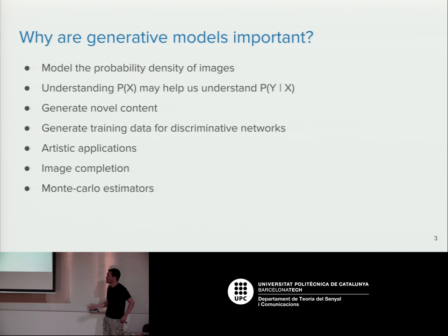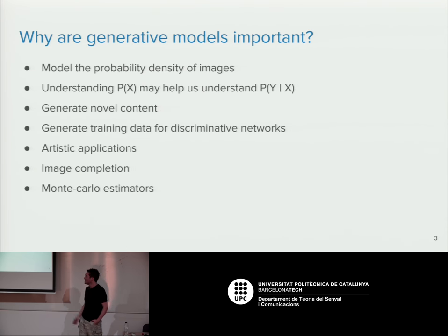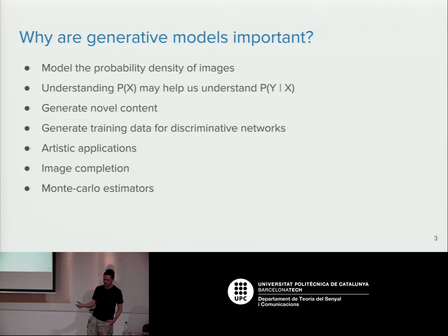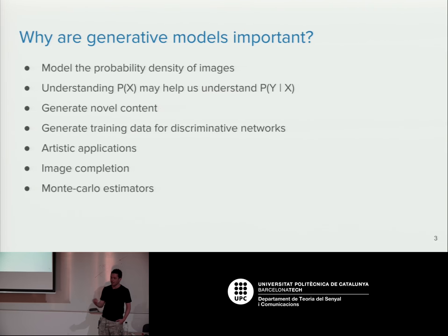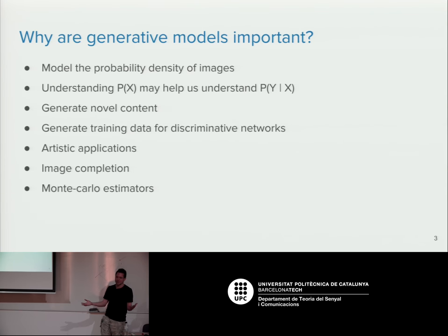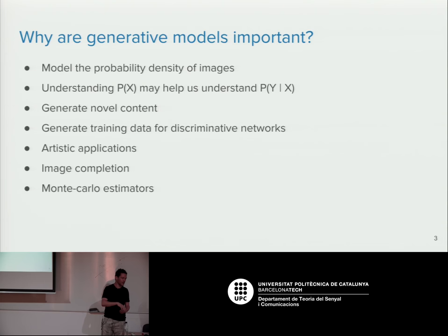Why do we care? These generative models allow you to do several things. First, they model either implicitly or explicitly the probability density of the image space — giving you some model of where images are. Most of your image space is going to be empty because if you draw a random image, it's just noise, so it's nice to have a model of what the distribution of images looks like.